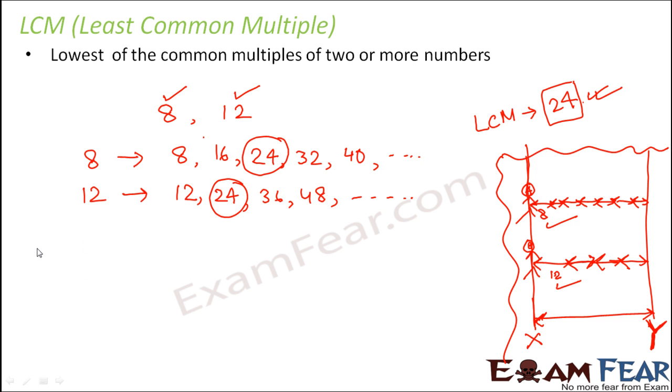Let us take another example. Let us take a pair of numbers say 15 and 20. If I ask you to find out LCM of 15 and 20, for 15 the multiples would be something like 15, 30, 45, 60, 75, 90 and so on.